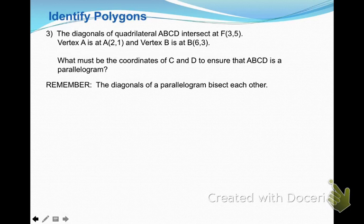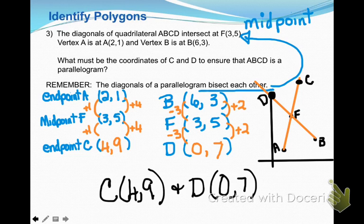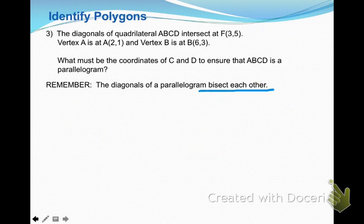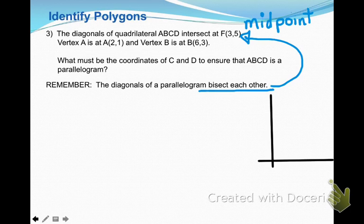The third problem: the diagonals of quadrilateral ABCD intersect at point F, which is at (3, 5). Vertex A is at (2, 1) and vertex B is at (6, 3). What must the coordinates of C and D be to ensure that ABCD is a parallelogram? Remember that the diagonals of a parallelogram bisect each other, meaning F is the midpoint of each diagonal.